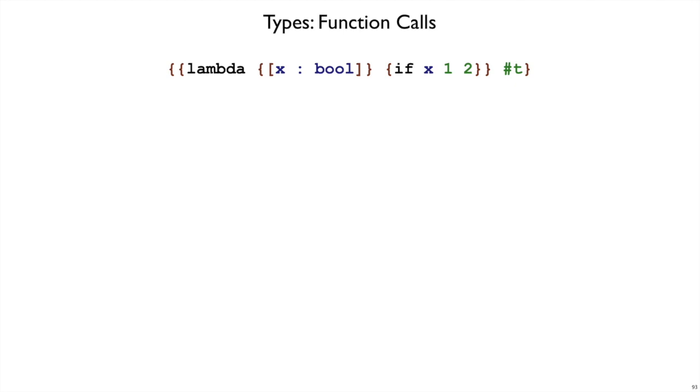We've given a type to lambda expressions that produce functions, but we haven't called any functions yet. So should we give a type to this expression? Here I've got this lambda, but because I've got left at the beginning, that means I'm applying that lambda to the argument true.